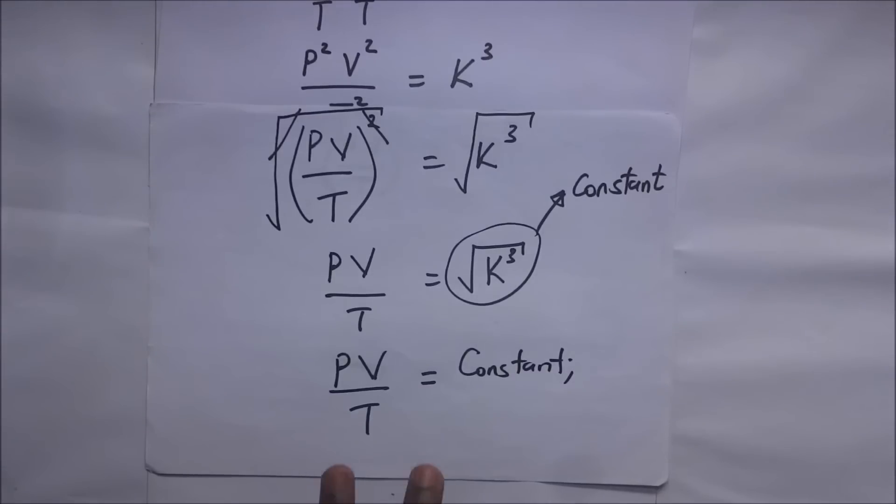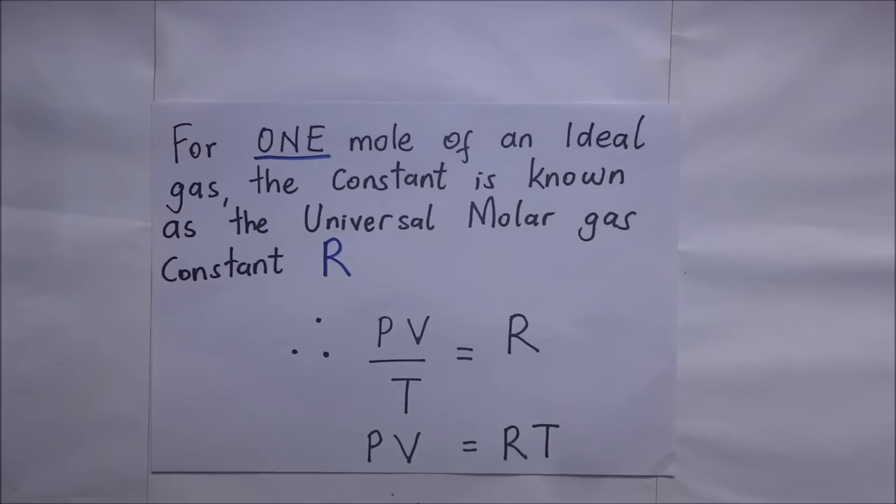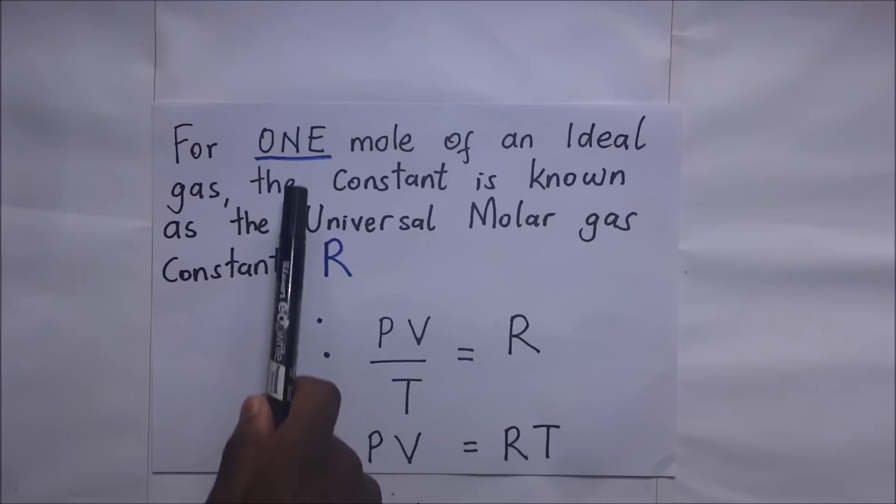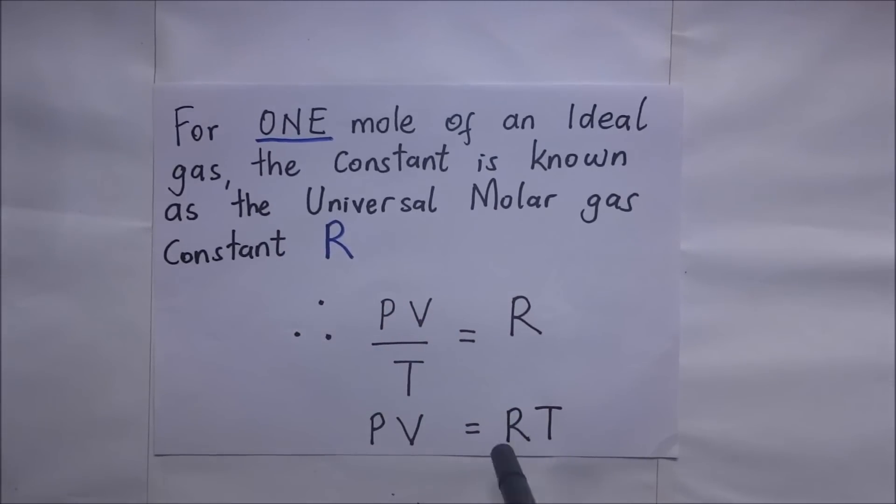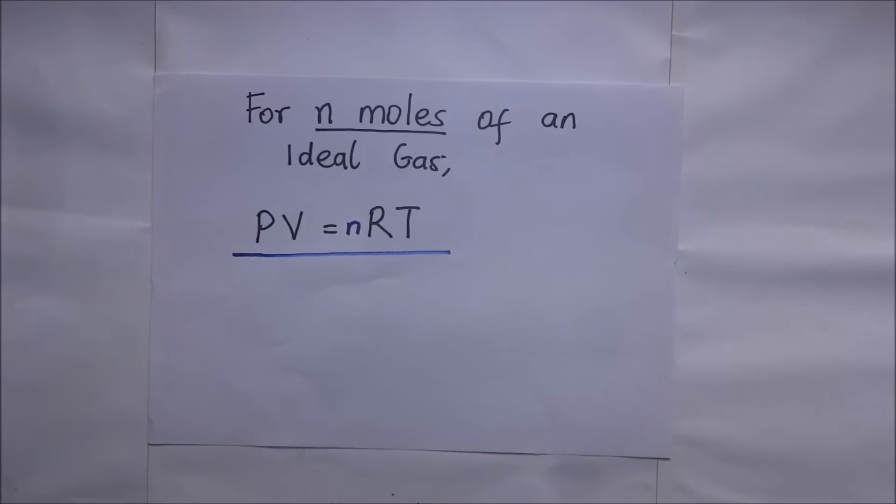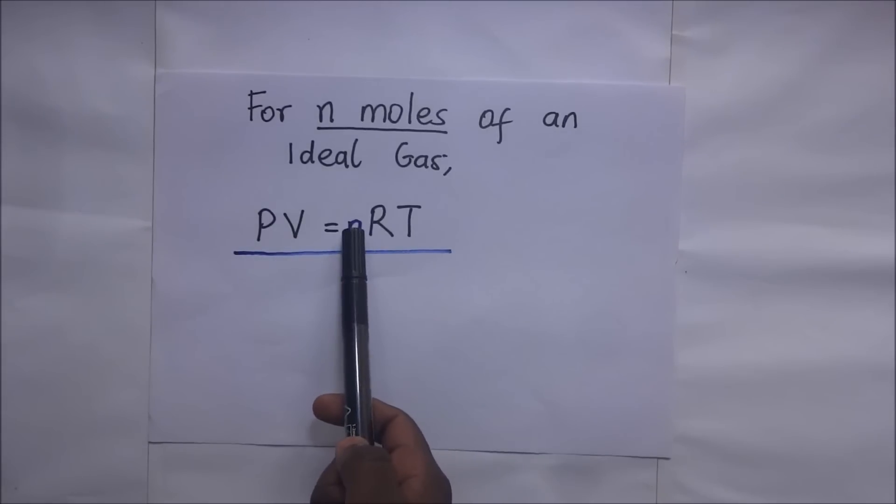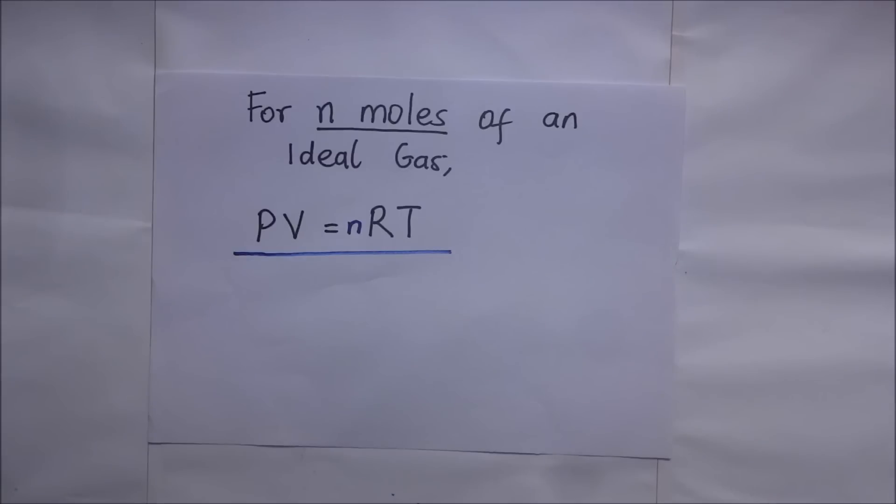Now here, when we're dealing with one mole of an ideal gas, this constant has a special name: the universal molar gas constant, which we have denoted as R. For one mole of an ideal gas, the constant is known as the universal molar gas constant, denoted by R. When we make this a flat equation by multiplying T on both sides, we end up with PV equals RT. But what if it's not just one mole? For N moles of an ideal gas, PV equals NRT, where N represents the number of moles. That is the ideal gas equation.